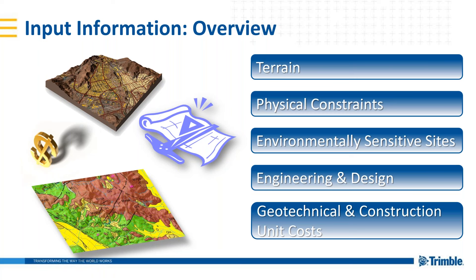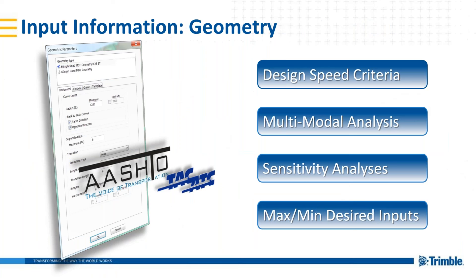The system has been utilized for wind farm design, where the minimum horizontal radius is determined by the length of the turbine blades being transported — showing the kind of configurability available. Geotechnical and construction unit costs are also important inputs: cost for earthworks, cost for structures, and cost for mass haul — things you would use in a detailed design estimate, called upon a bit earlier here. The system is sensitive to those values and considers them when determining alignment placement.